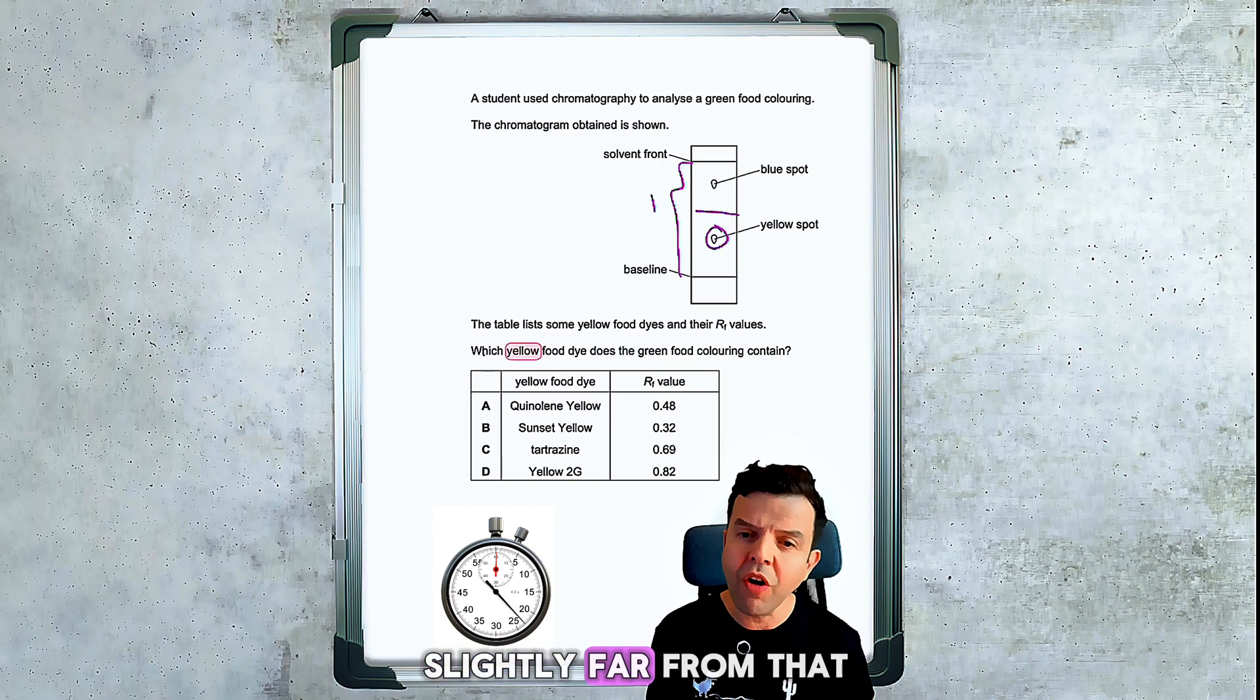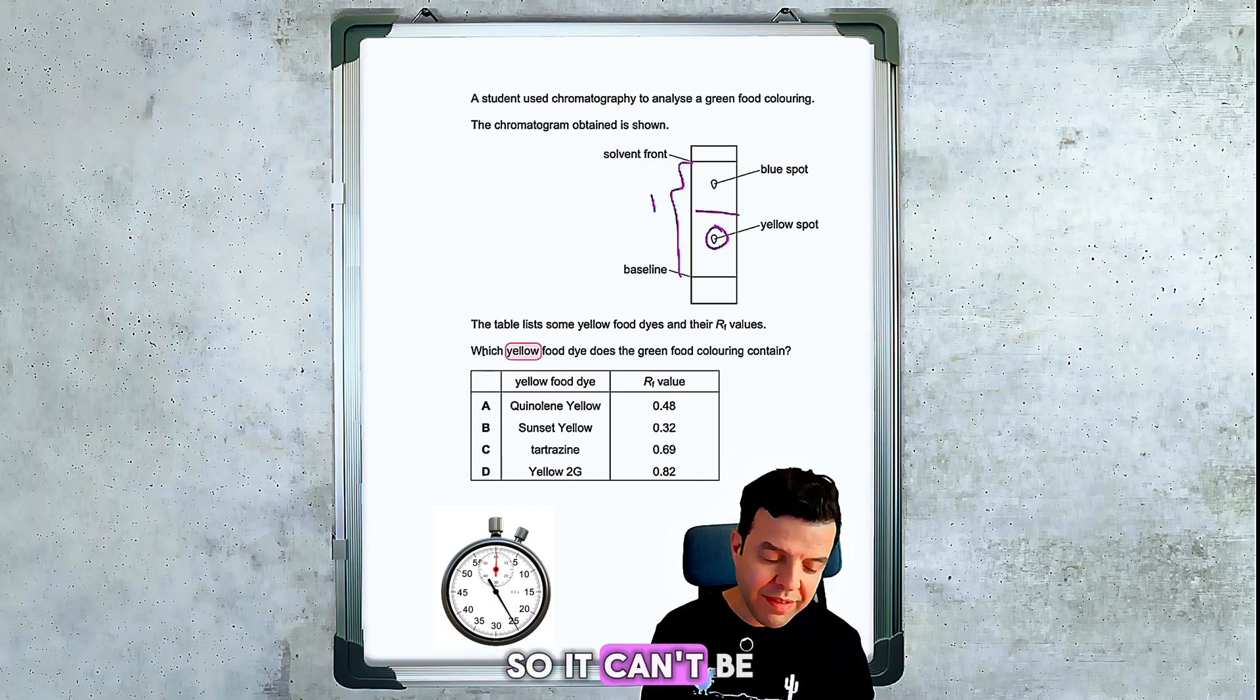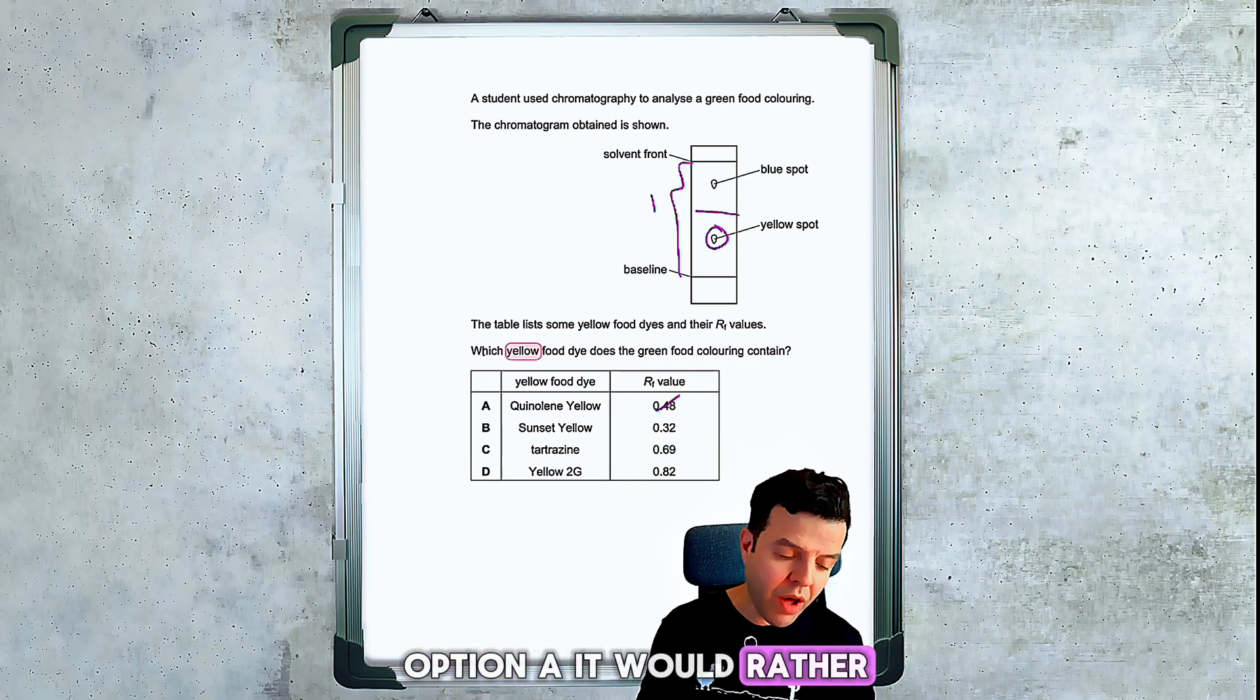The yellow spot is slightly far from the halfway line, so it can't be option A. It would rather be option B.